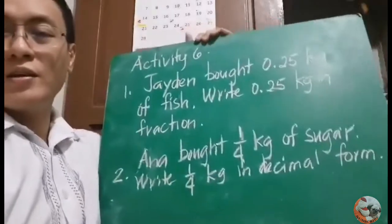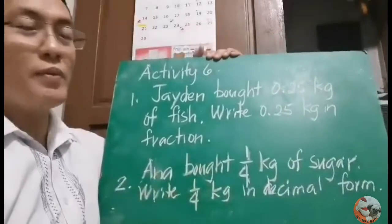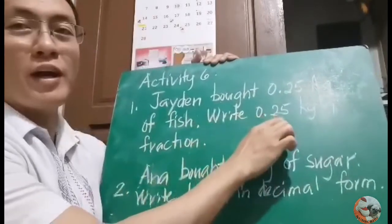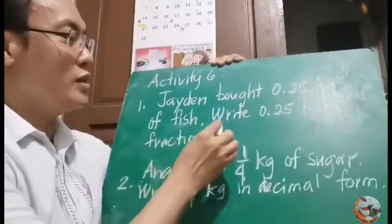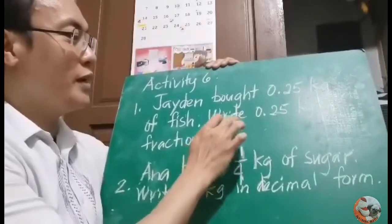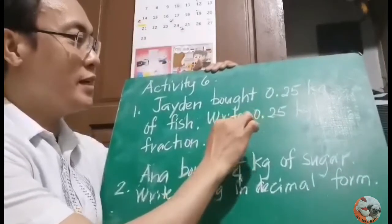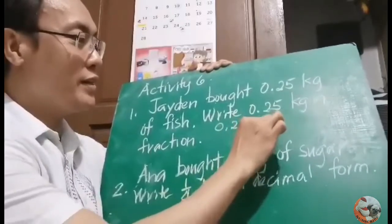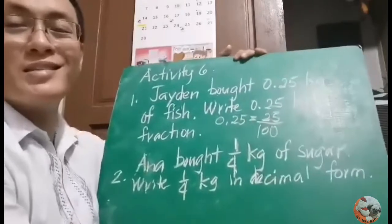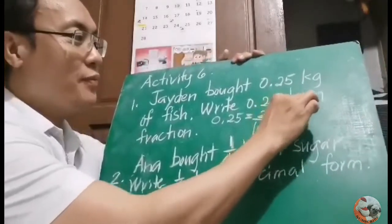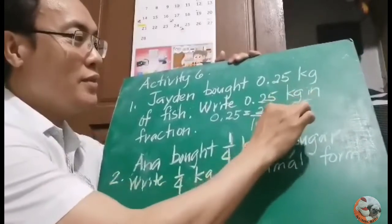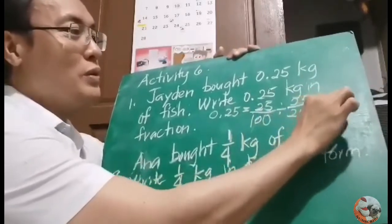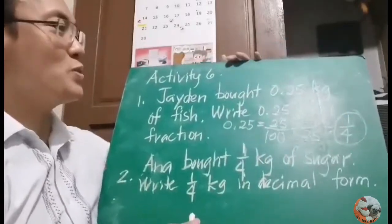Activity 6 is all about read and answer. Let's read the problem: Jayden bought 25 hundredths kilogram of fish. Write 25 hundredths kilograms in fraction. So 25 hundredths in fraction is 25 over 100. Since 25 over 100 is not yet in lowest terms, divide by the GCF of 25. 25 divided by 25 is 1, and 100 divided by 25 is 4. The answer is 1 fourth.